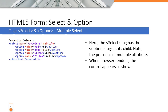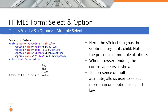When the browser renders this select, the control appears as a list box with no drop-down arrow. The presence of the multiple attribute allows the user to select more than one option by holding down the Control key. For example, the user has selected red and, while holding Control, also selects green — resulting in two items selected.